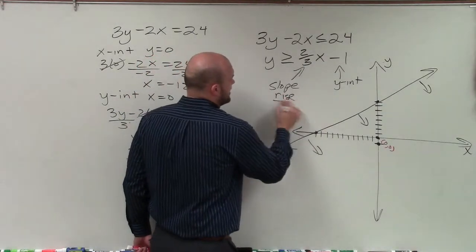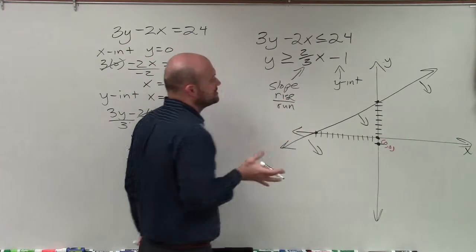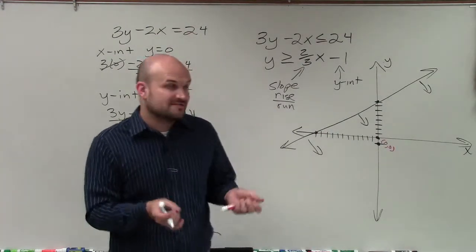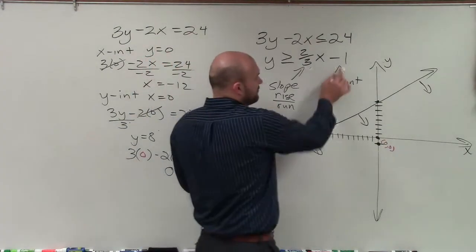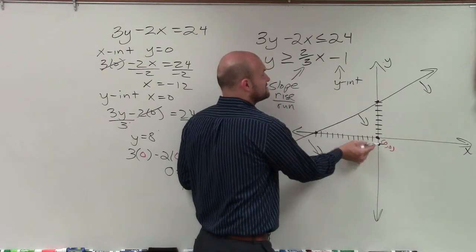Now remember, slope, we can rewrite as our rise over run. But basically, it's the change in y values over the change in x values between any two points. So from my y-intercept, where the graph crosses the y-axis, to find the next point,